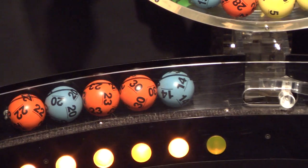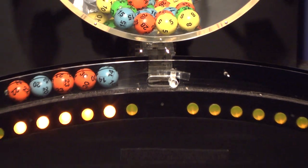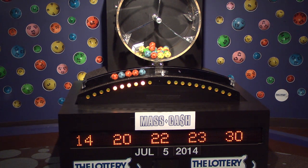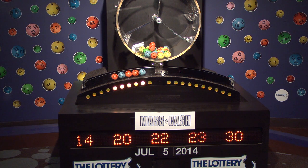Once again, the winning Mass Cash numbers for Saturday, July 5th are 14, 20, 22, 23, and 30. Remember to log on to MassLottery.com to watch all the Mass State Lottery's drawings.